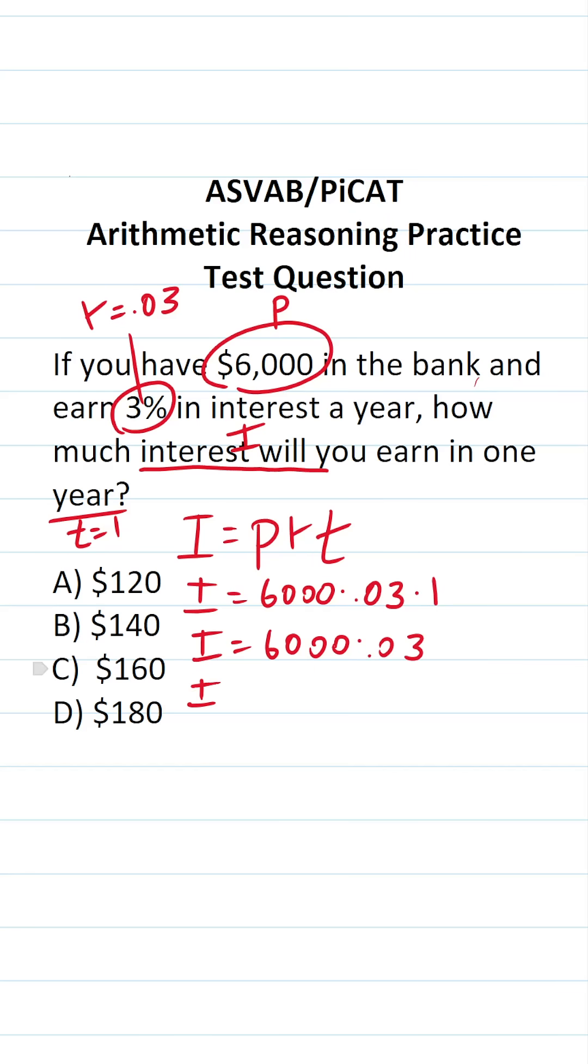I'm going to do this math off to the side. We have 6,000 times 0.03. To do this, we have to clear the decimal in 0.03 by shifting it two times to the right. This becomes 6,000 times 3, with two decimals to move back into our answer.